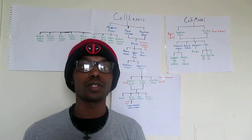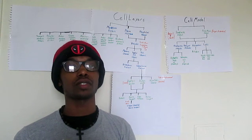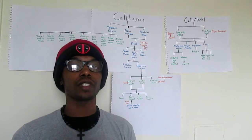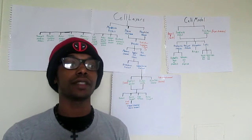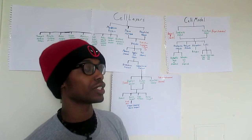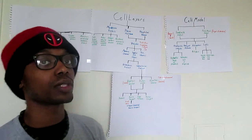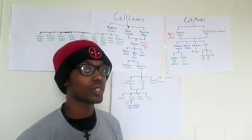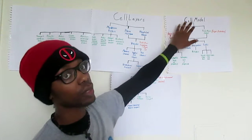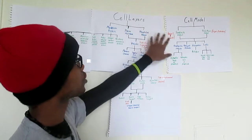My name is Anthony Williams and today we're going to talk about the cell membrane and all of its parts that it breaks down into. Within the cell membrane we have two parts which is the cell model and the cell layers.